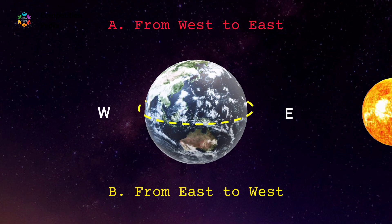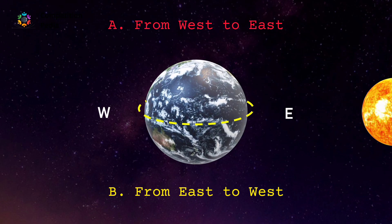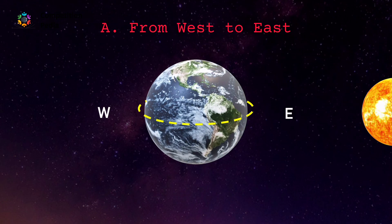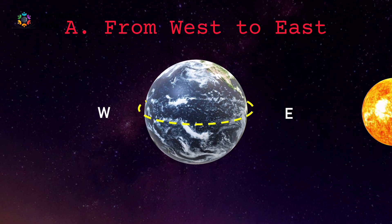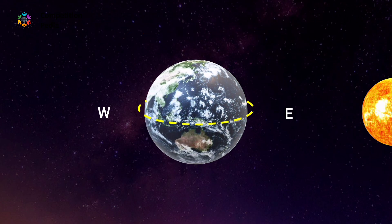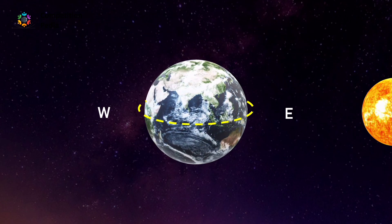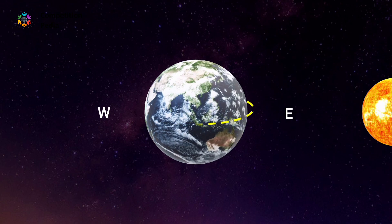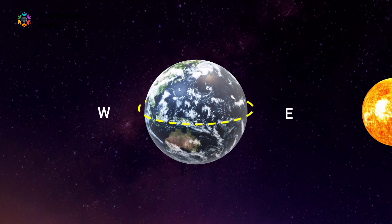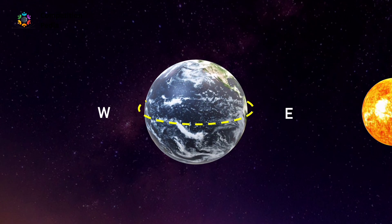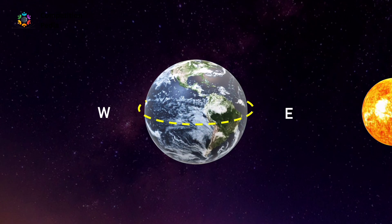Now tell me, how is the earth rotating — like this, from West to East, or like this, from East to West? What's your take? The correct option is West to East, since we have already been taught that in our schools. If you want to change your opinion you can, but if not, let me surprise you. Let me take you to space again.